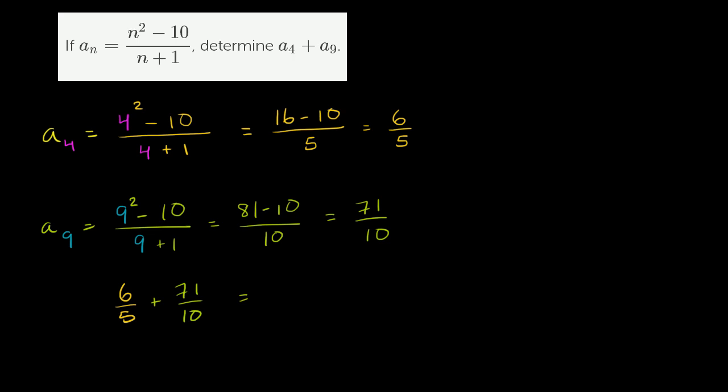We can rewrite 6 fifths as being equal to 12 tenths, so 12 tenths plus 71 over 10.